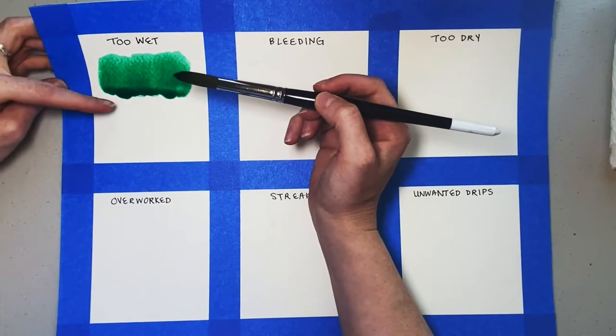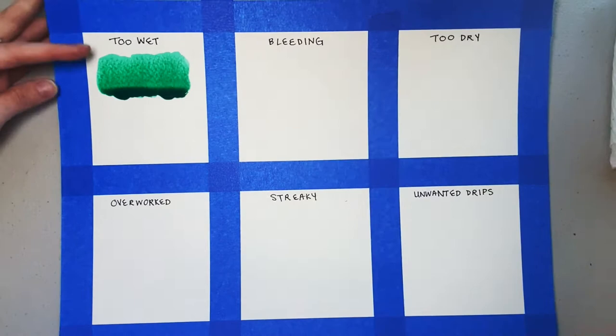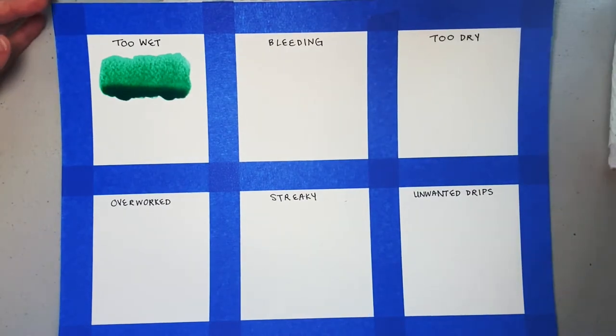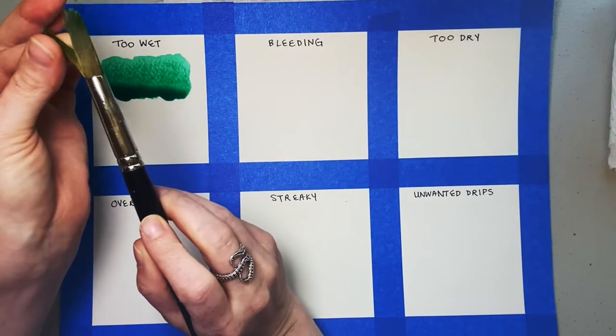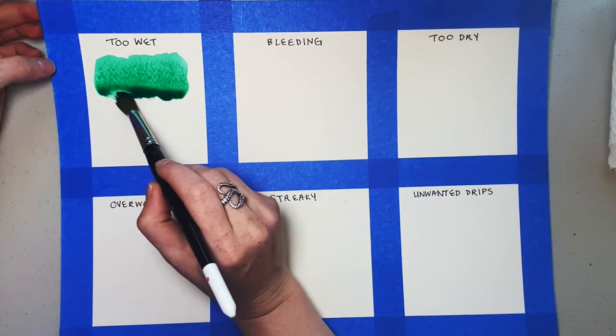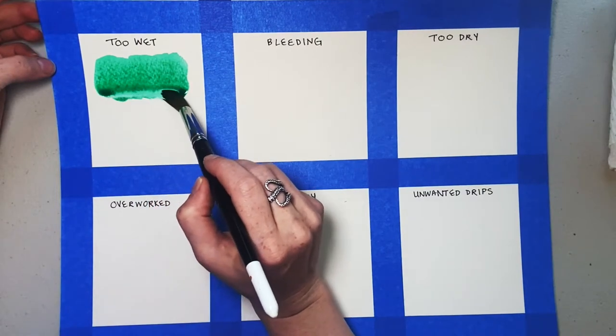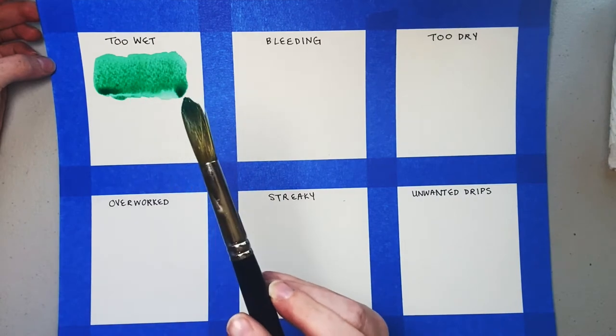So to fix this, dry off all the water on your brush until it's completely dry. This will create what I call a thirsty brush and it will soak up all the extra water. Run the brush evenly across the pooled area a few times. You may need to dry off your brush between strokes so it can continue to soak up the water.